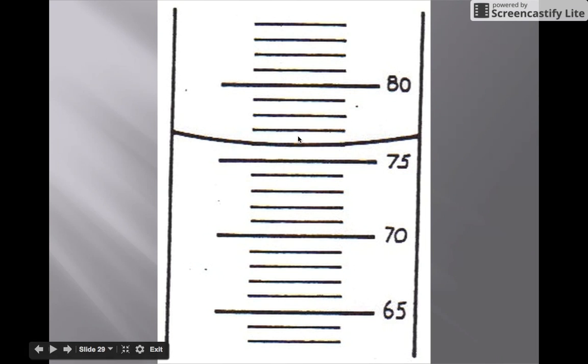Because if it were here, it would be 76.5. So we still have to report it as 76 point something. So it's right on the line. And 0 is a number as well. So 76.0 is the best answer for this particular graduated cylinder.